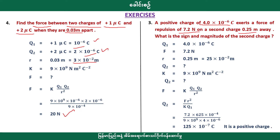The second charge is at 0.25 meters. k is equal to 9 × 10⁹ Newton meter squared per Coulomb squared. Using f = kq1q2 / r², we notice here q2 equals 2.